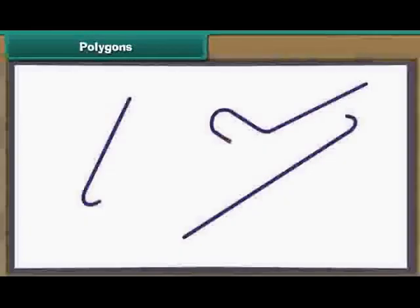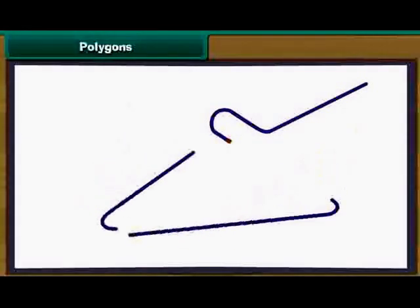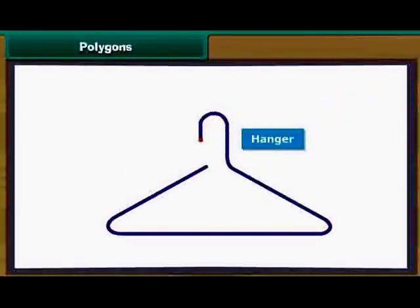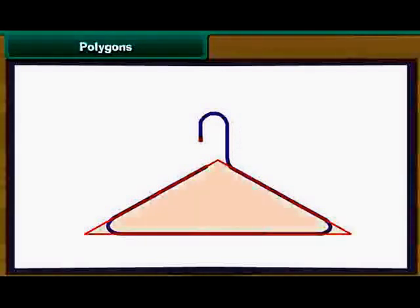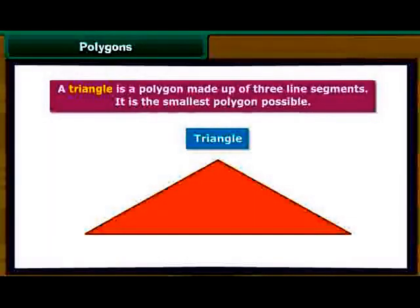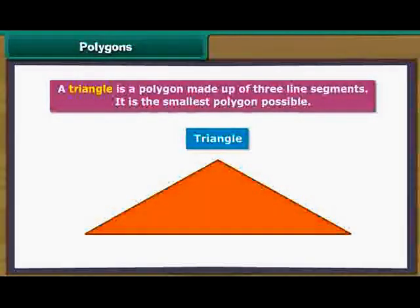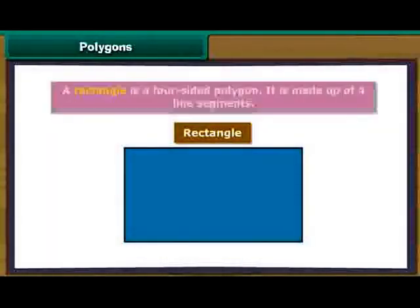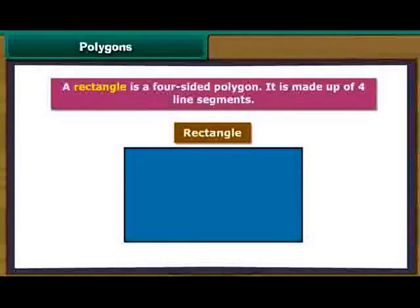We take three pieces of plastic and join them to form a towel hanger. We have created a triangle. A triangle is a polygon made up of three line segments. It is the smallest polygon possible. We use four pieces of carved wood to create a photo frame. We have created a rectangular photo frame. A rectangle is a four-sided polygon made up of four line segments.